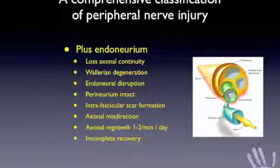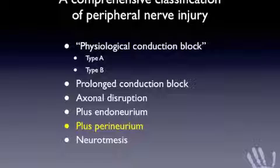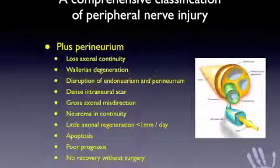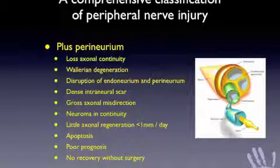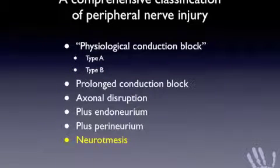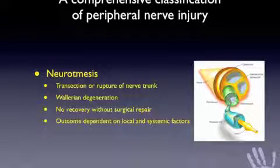Duration of recovery is again dependent on how far the injury is from the end organs. Once there is perineural damage within the nerve there is much more extensive scarring, distal degeneration, and the scar results in gross axonal misdirection — normally a neuroma in continuity is the consequence. If any axons manage to get through the scar their rate of progression is very slow, usually less than 1 mm per day. Because of the degree of scarring the prognosis is poor, there is much cell loss due to apoptosis, and generally there is no significant motor or sensory recovery; surgery is often involved in these cases. Neurotmesis is the transection of a nerve where Wallerian degeneration occurs, and surgery is imperative if any recovery is to be attained, though the outcome is dependent on both local and systemic factors.